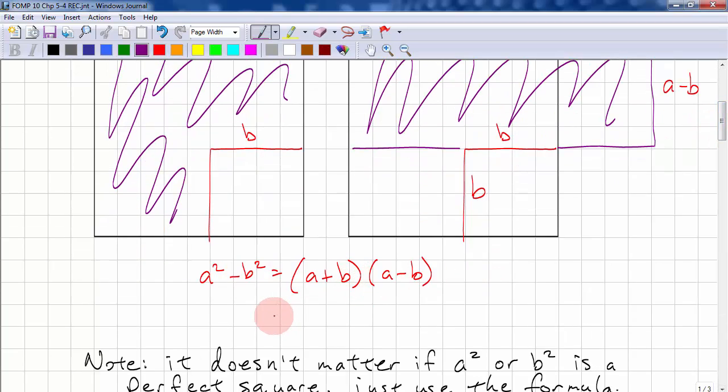So anytime we see a² minus b², we can just take the square root of the first one, that's a, plus square root of the second one. And it's the same thing over here, except there's a minus sign. And if we were to FOIL this, we would see a², that's first, outer is minus ab, inner is plus ab, and last is minus b². These two cancel out, and we get a² minus b².